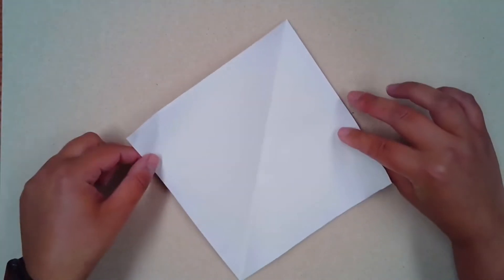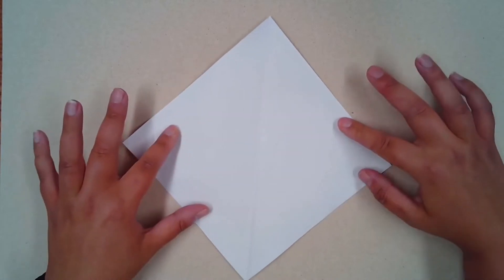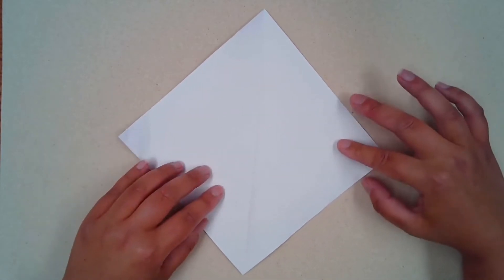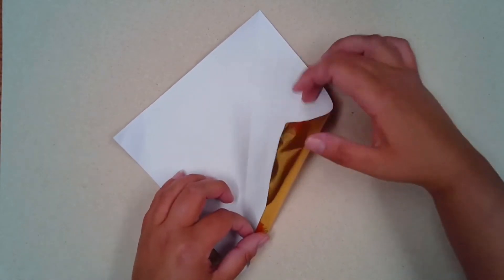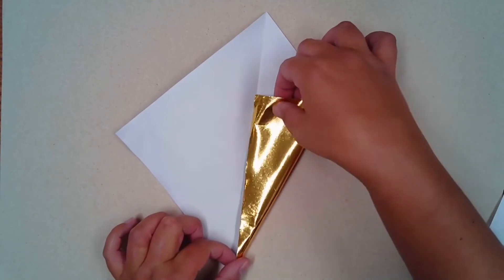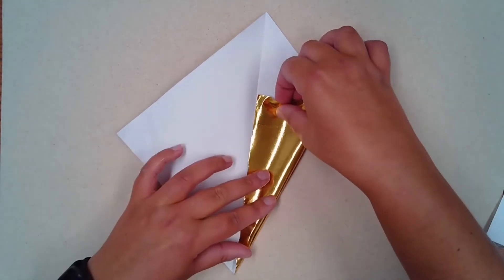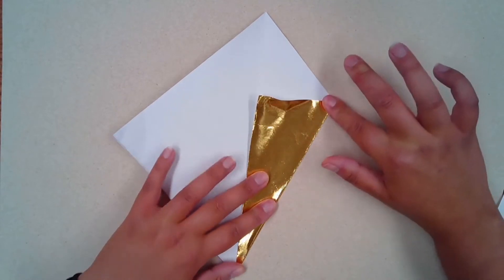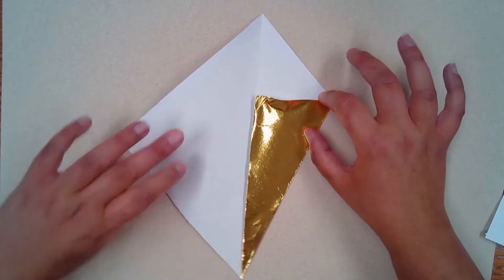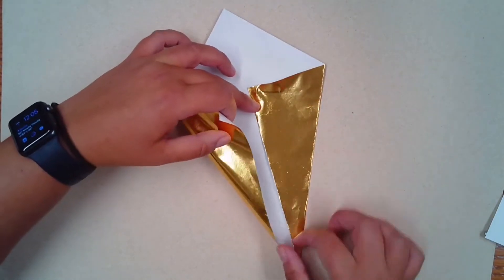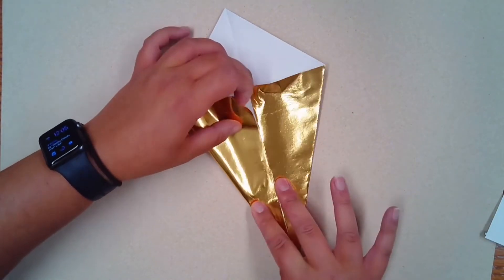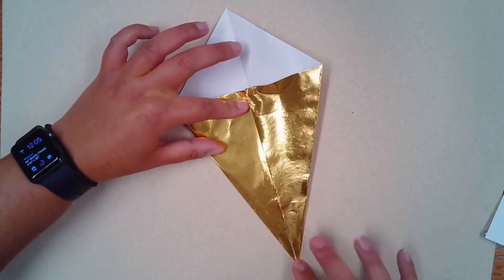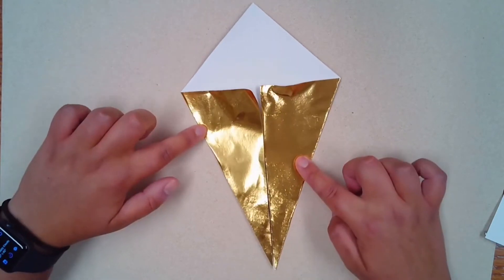So once you've done that, open it back up, hold it almost like a diamond, and now you're going to take one side and fold it to the center line so that there's a point at the bottom. Do the same with the left. It's almost going to look like a kite.